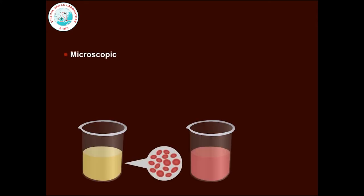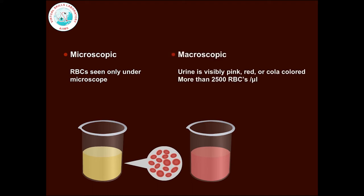Hematuria is described as microscopic when red blood cells are seen only under the microscope, and macroscopic when the urine is visibly pink, red, or cola colored, indicating that more than 2500 RBCs are present per microlitre of urine specimen.